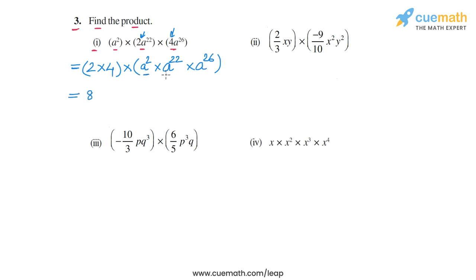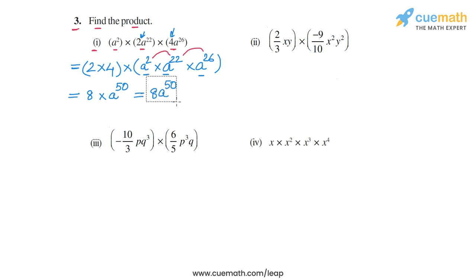Then a² × a²² × a²⁶ — we add all three exponents: 2 + 22 + 26 = 50. So we get a⁵⁰. Therefore the product is 8a⁵⁰. This is the answer for part 1.